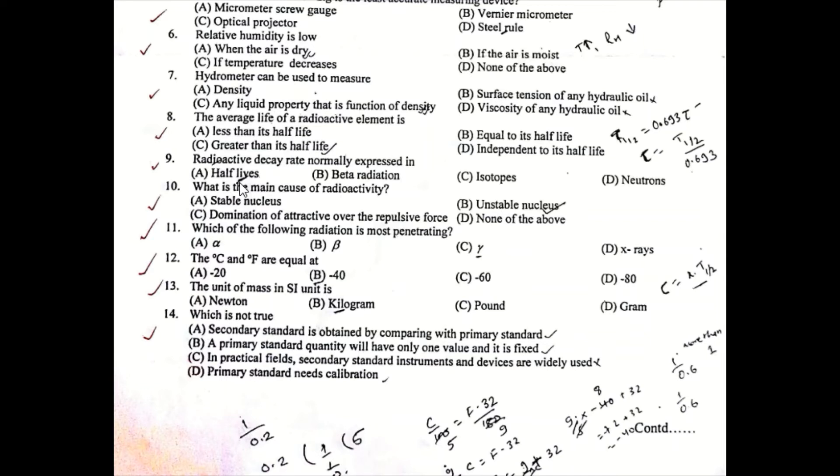Question Number 9: Is radioactive decay rate normally expressed in half-life, beta radiation, isotopes, or neutrons? Question Number 10: What is the main cause of radioactivity? A) Stable nucleus, B) Unstable nucleus, C) Domination of attractive over the repulsive force, D) None of the above.